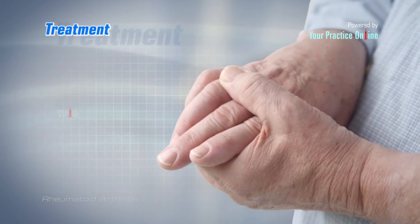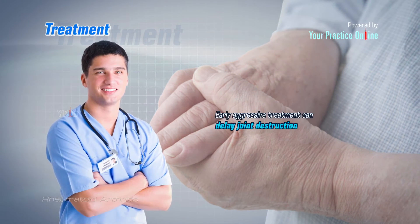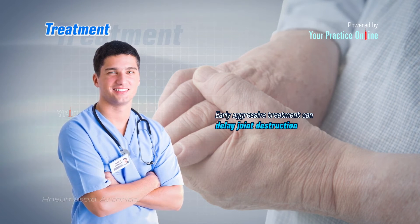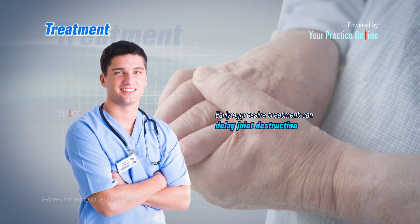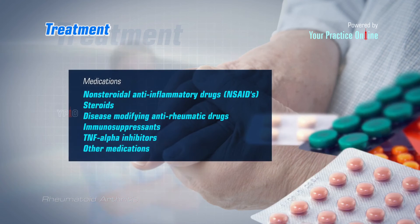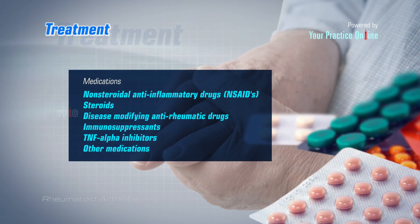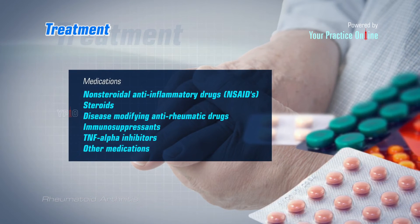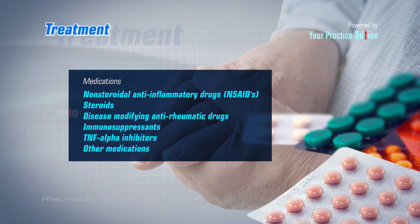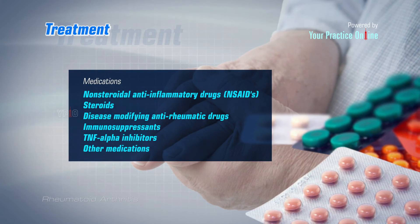There is no cure for rheumatoid arthritis, but early aggressive treatment can delay joint destruction. Treatment is aimed at controlling symptoms and preventing joint damage by mainly reducing inflammation. Medications may include non-steroidal anti-inflammatory drugs or NSAIDs, steroids, disease-modifying anti-rheumatic drugs, immunosuppressants, TNF-alpha inhibitors, and other medications.